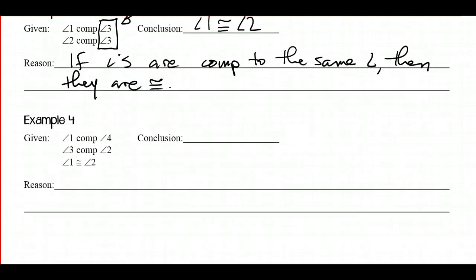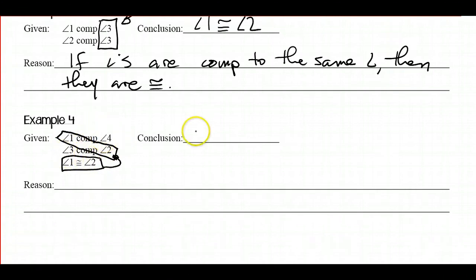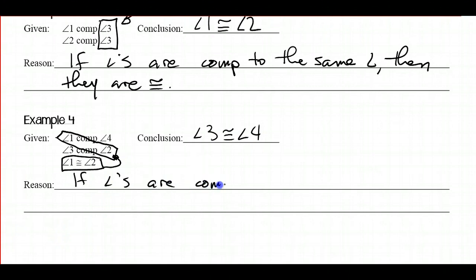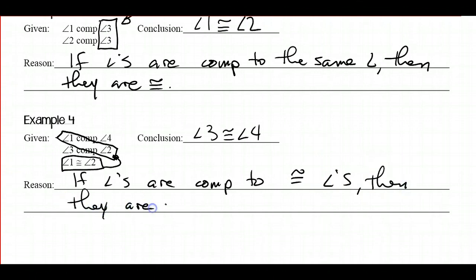Last example: angles 1 and 2 are congruent. Angles 3 and 4 are complementary to those congruent angles. So angle 3 is congruent to angle 4. Theorem: if angles are complementary to congruent angles, then they are congruent.